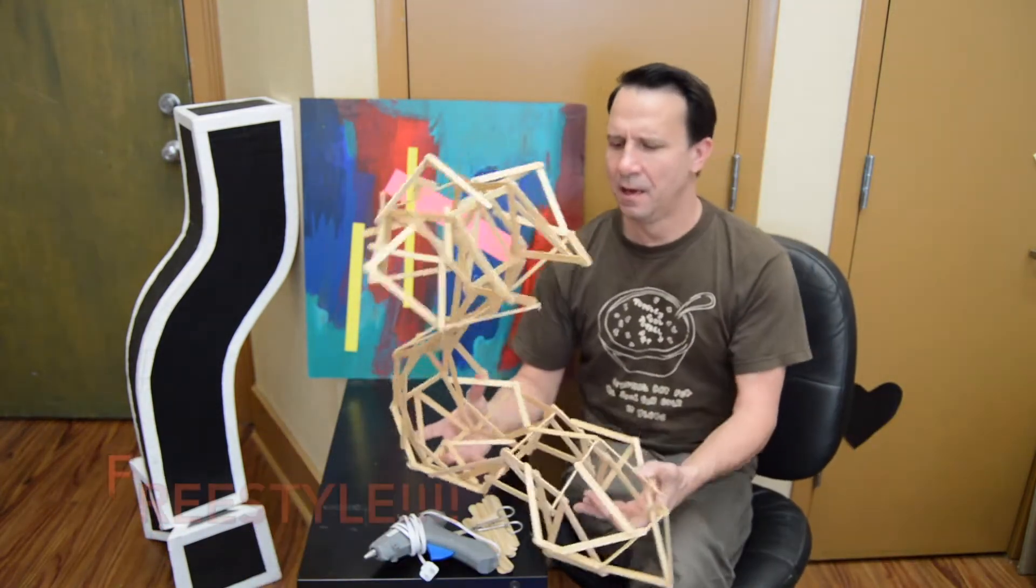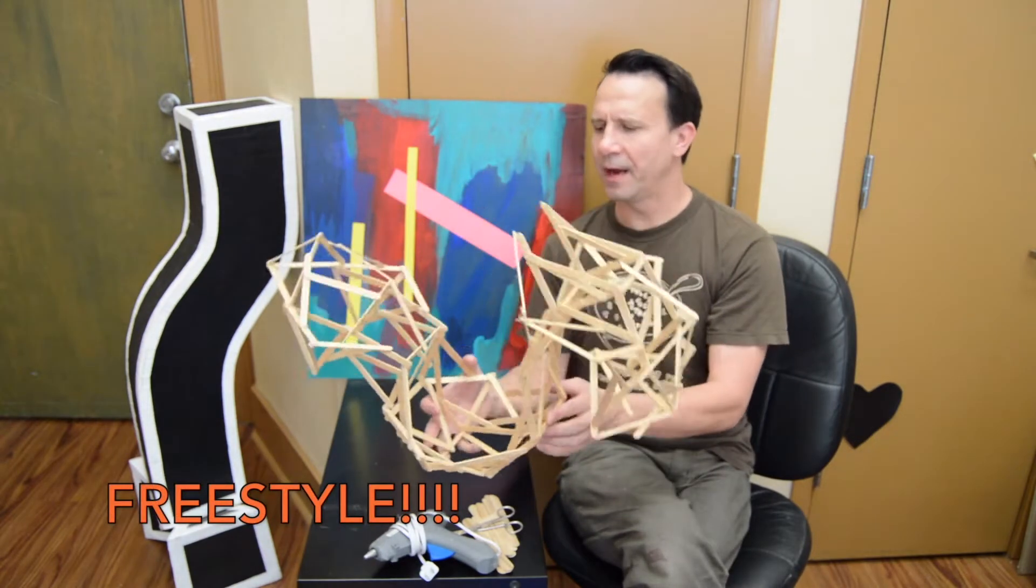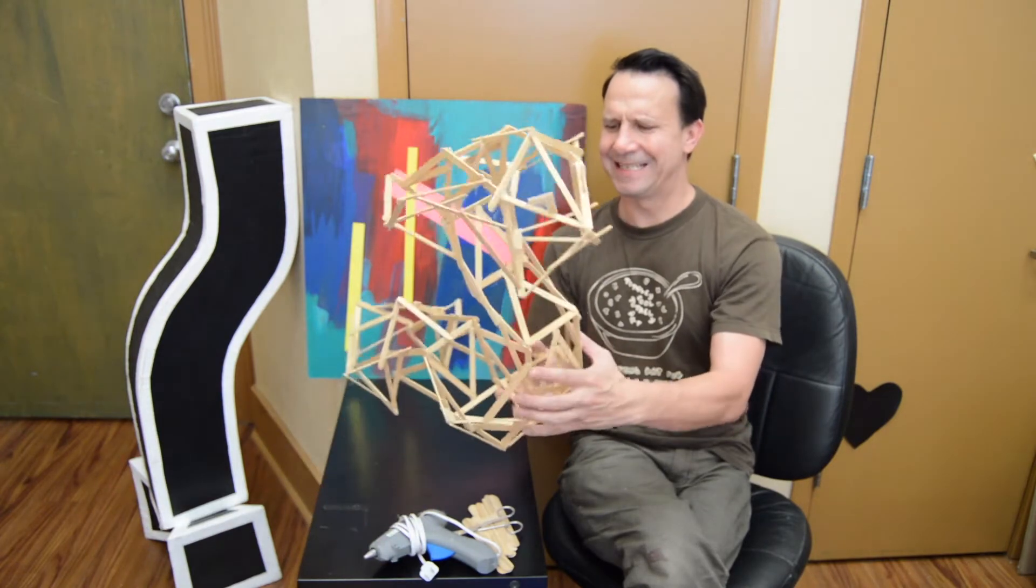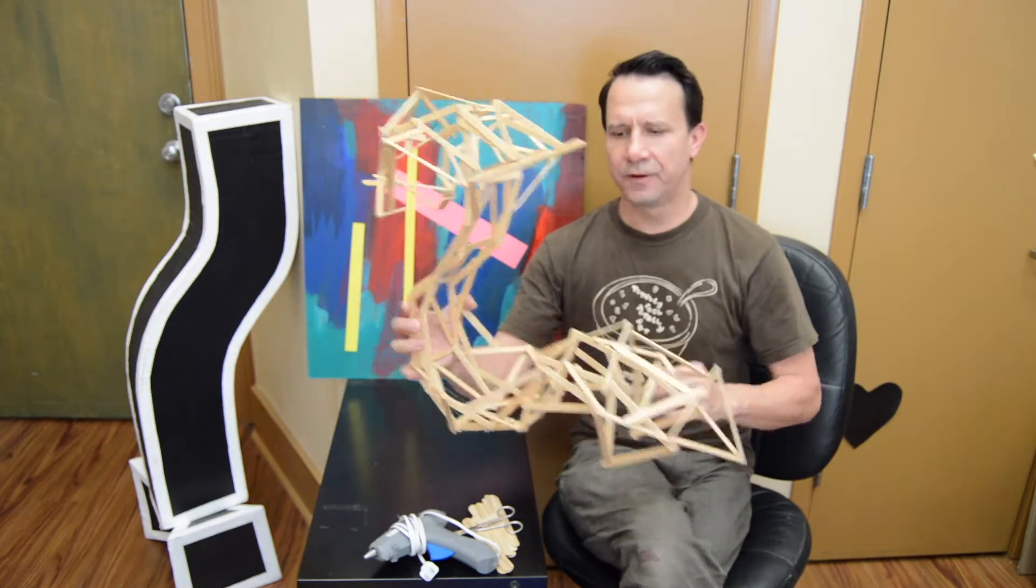Talking about freestyling, this is kind of a freestyle popsicle sculpture I made a while back and I was just kind of winging it. But it's fun. It kind of looks like a snake or a cobra or something like that. That's a freestyle.